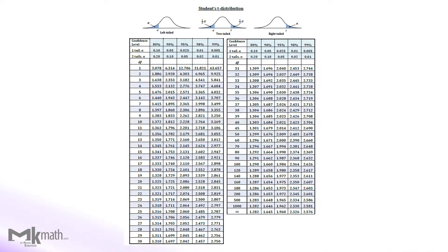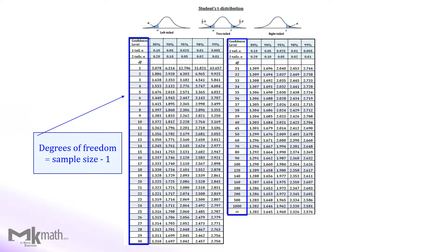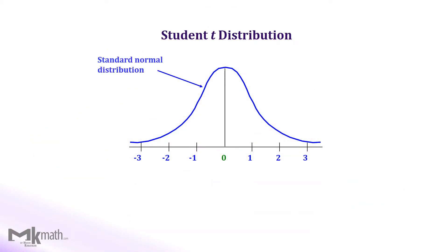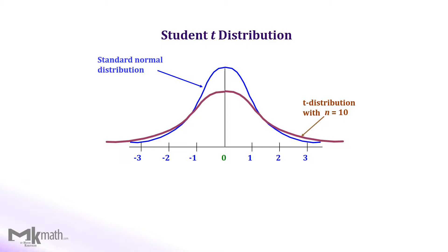Here is the t-table we use. The first column shows the degrees of freedom, which we can find by subtracting one from the sample size. The top row shows the confidence level, and the intersection of those gives the t-scores. Comparing to the standard normal distribution, the shape of t-distributions depends on the sample size. The t-distribution is used if we don't know the standard deviation of the population sigma.